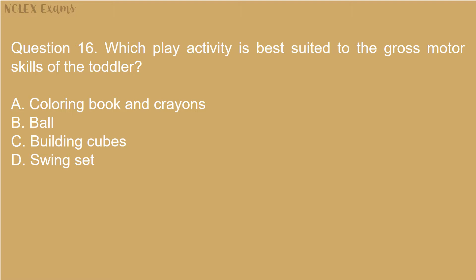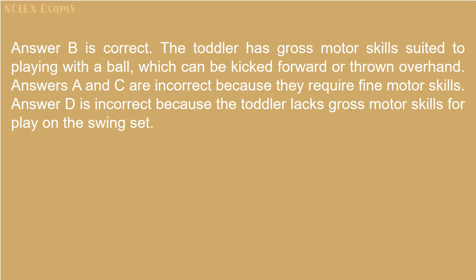Answer B is correct. The toddler has gross motor skills suited to playing with a ball, which can be kicked forward or thrown overhand. Answers A and C are incorrect because they require fine motor skills. Answer D is incorrect because the toddler lacks gross motor skills for a swing set.